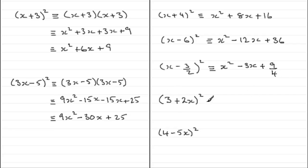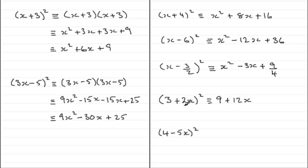For 3 plus 2x all squared: reversing the terms doesn't make any difference. Square the first term — 3 squared is 9; the product is 3 times 2x which is 6x, doubled gives plus 12x; then square the last term, 2x times 2x is plus 4x squared.